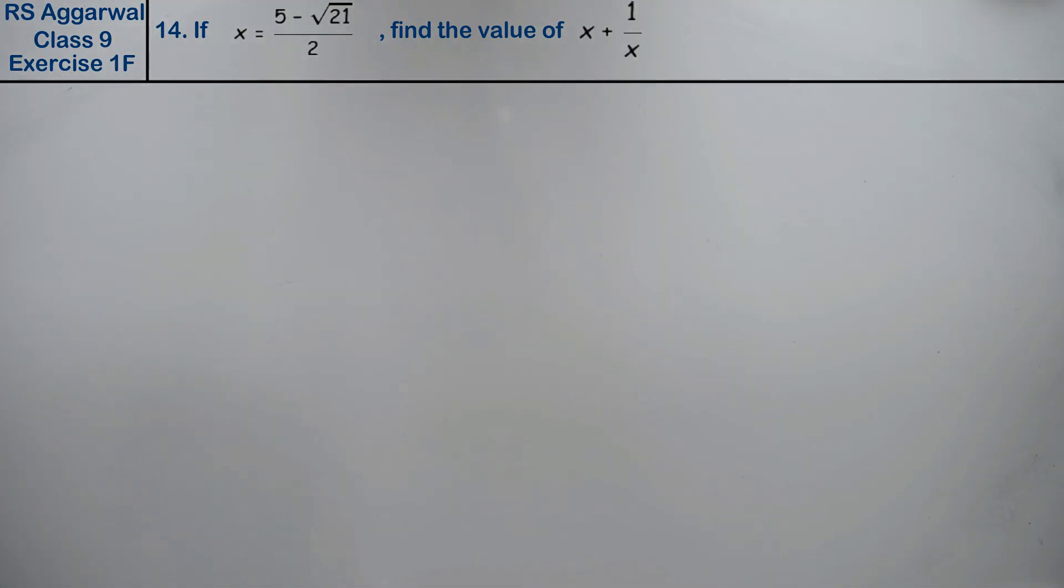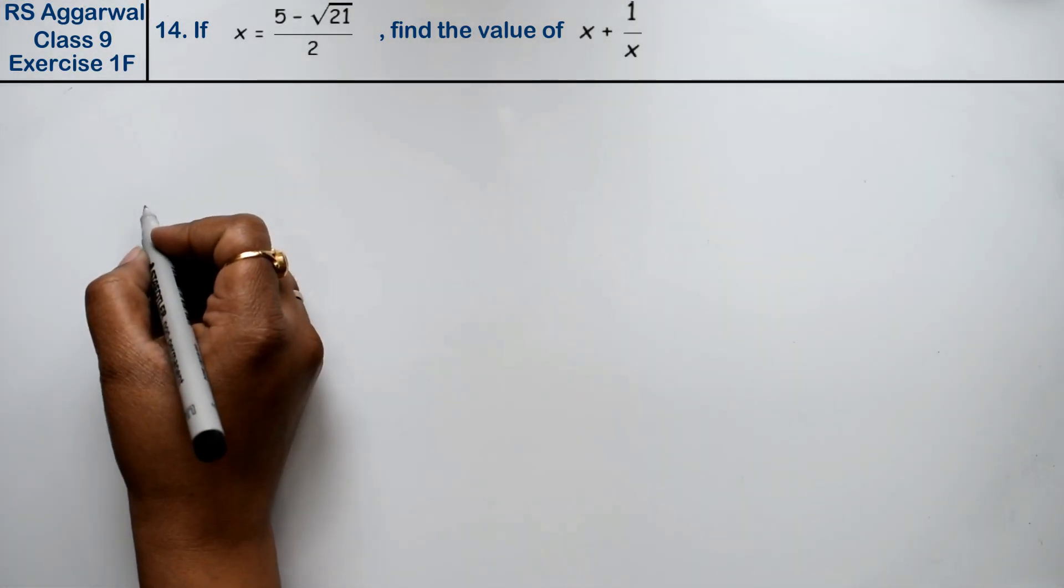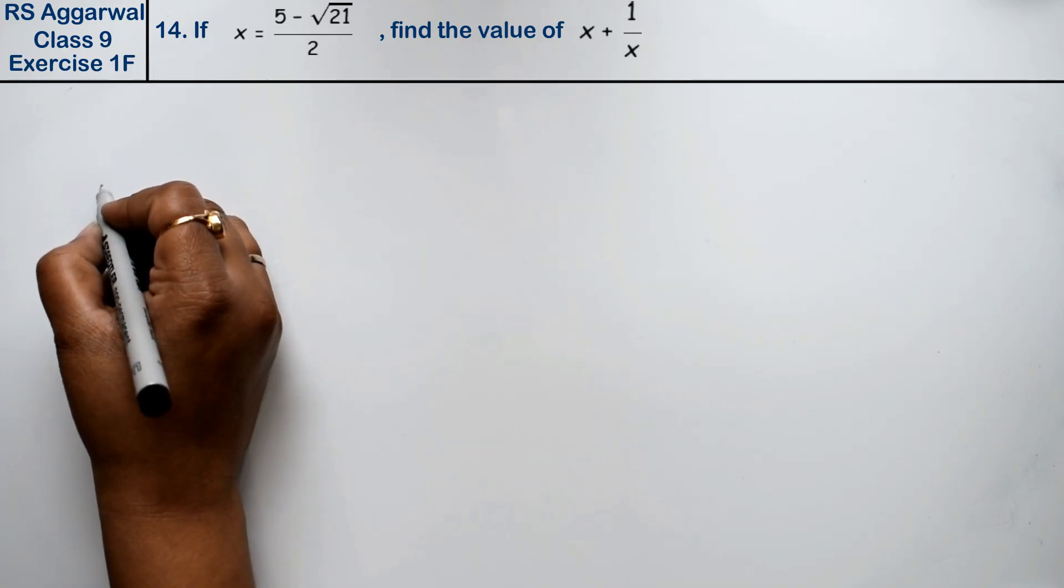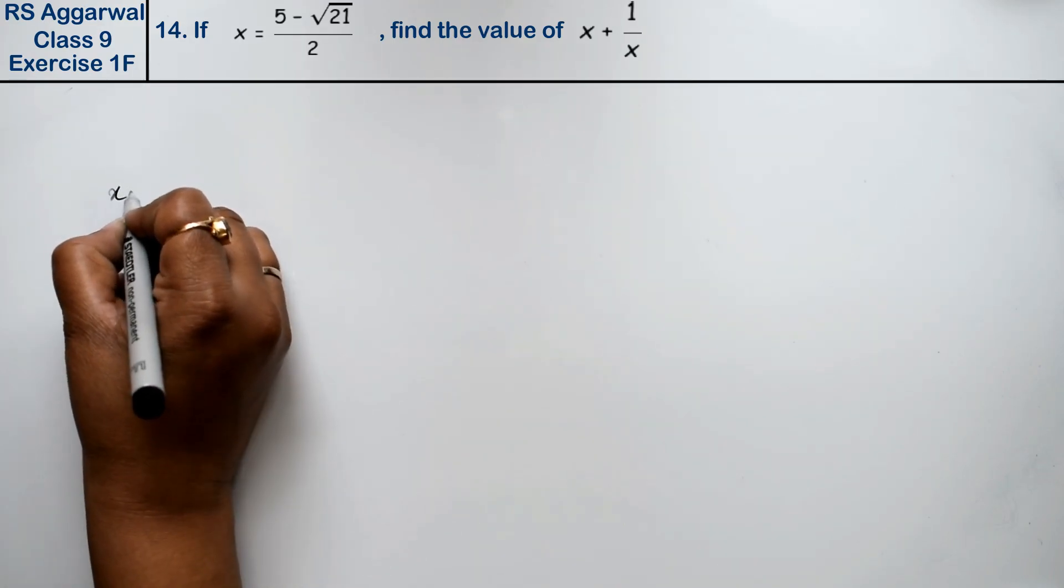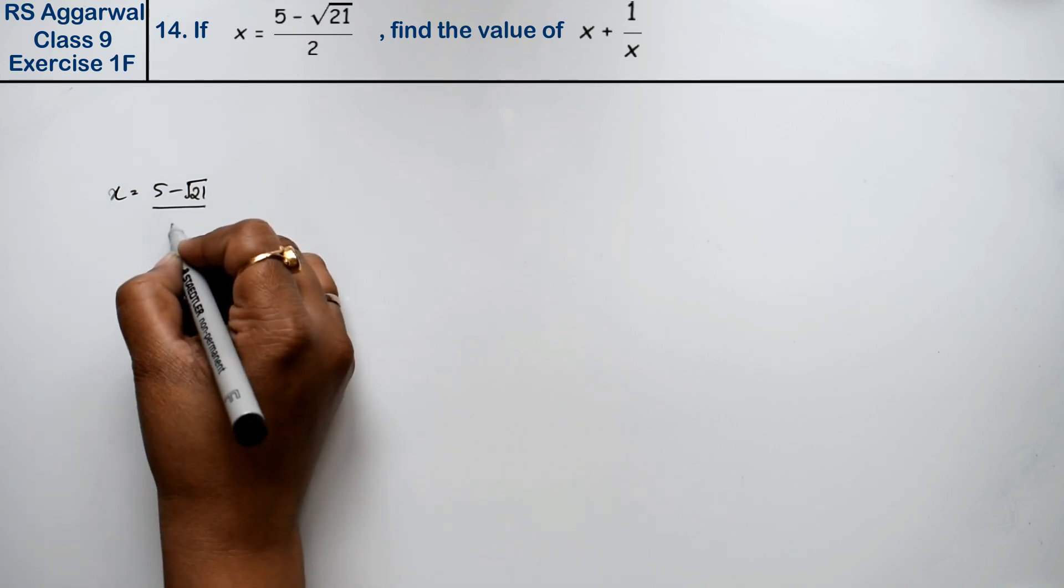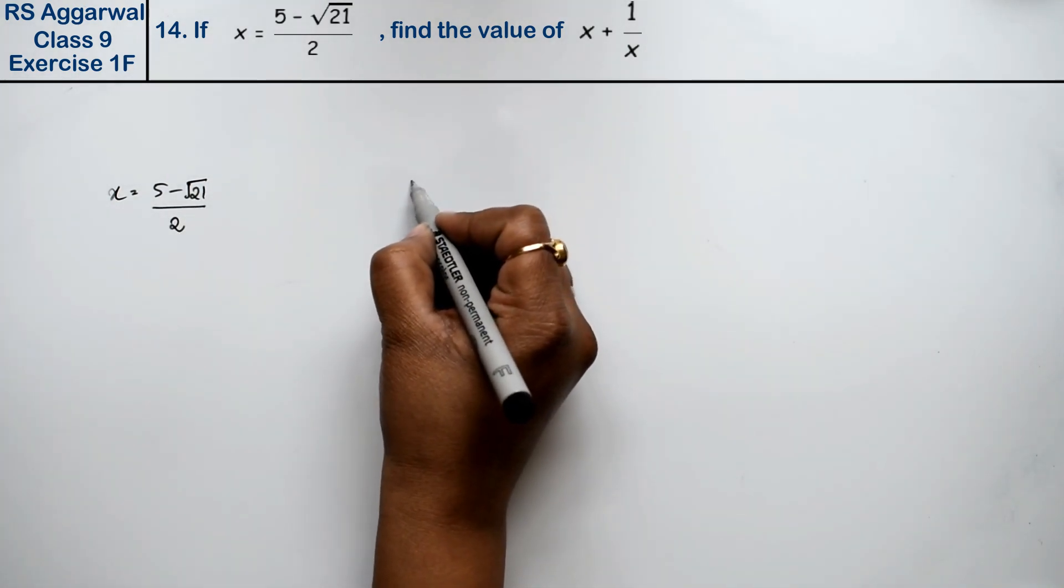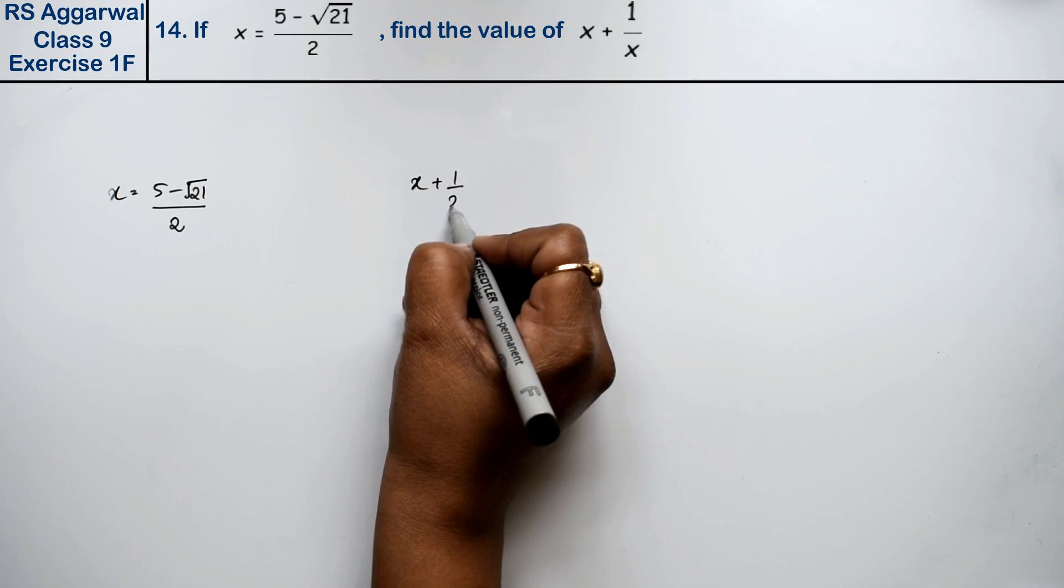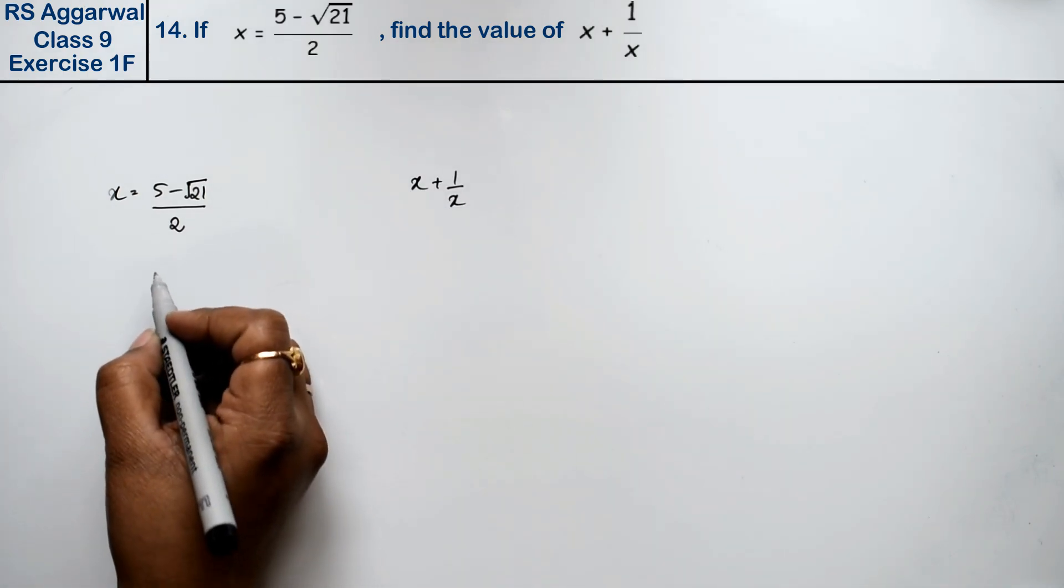Let's do question number 14 of exercise 1F. This is from the number system chapter. The question states: if x equals (5 - √21)/2, find the value of x + 1/x.